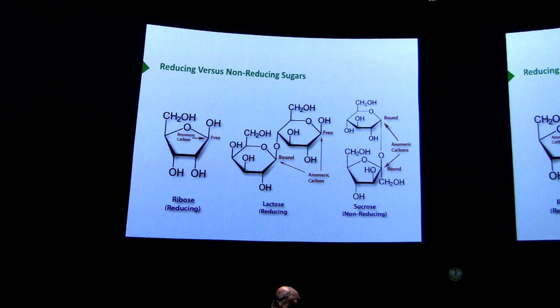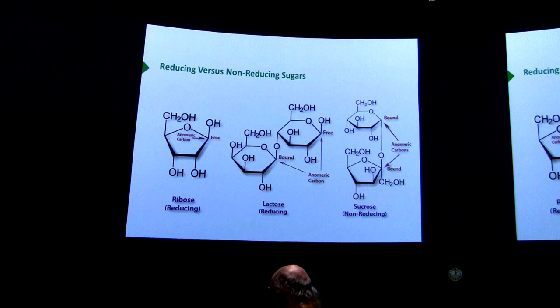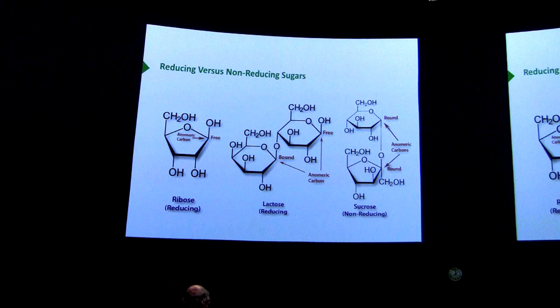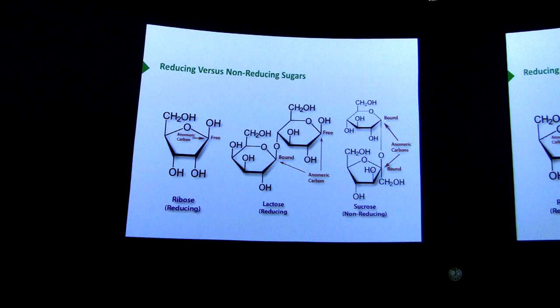That brings us to the subject of reducing sugars. Why do we care about reducing sugars? Because it's a category of sugar, and reducing sugars are more readily oxidized than non-reducing sugars. If they're more easily oxidized, why do we call them reducing sugars? Because for one thing to be oxidized, something else has to be reduced. Oxidation means loss of electrons — those electrons go to the compound that gets reduced. It's fairly easy to determine if something is a reducing sugar by putting it in a solution of copper two-plus. If electrons are given up, it becomes copper one-plus and that involves a color change we can readily see.